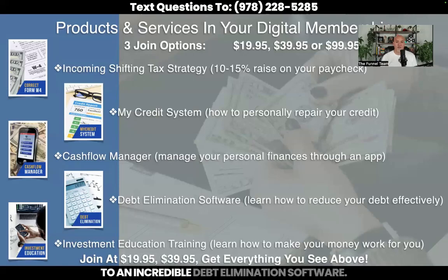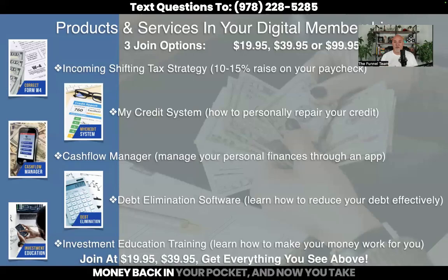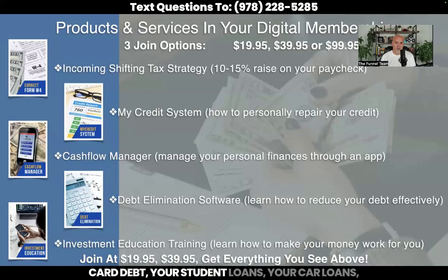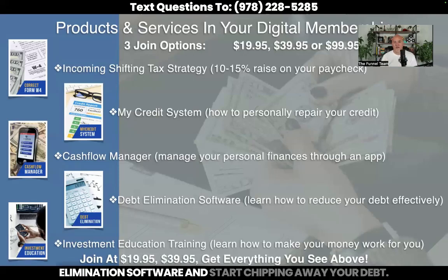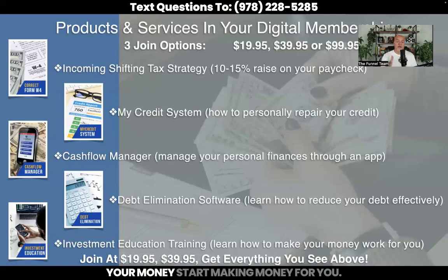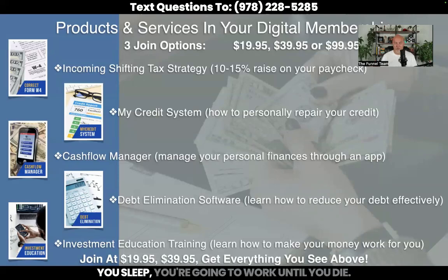You'll get access to debt elimination software — some of our team members are getting an additional $800 to $1,100 per month in income, and you can use that to chip away at your credit card debt, student loans, or car loans. Lastly, you get access to the best investment education available, which teaches you how to take your extra money and have your money start making money for you. As Warren Buffett says: if you don't learn how to make money while you sleep, you'll work until you die.